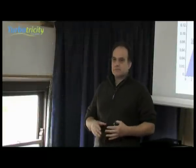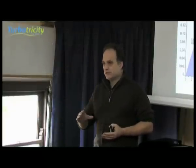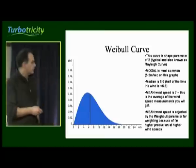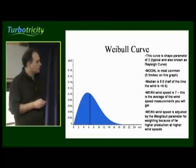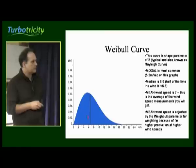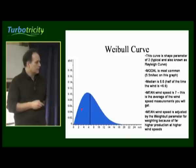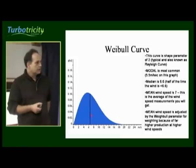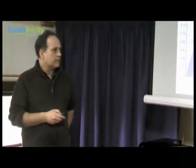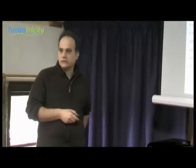The Weibull curve is a curve of the distribution of the wind speed — how often you get wind at different speeds. This curve shows that the most common wind speed is about 5.5 metres per second. The median — half the time the wind is below 6.6 and the rest of the time it's above 6.6. And the average of all wind speed measurements, the mean wind speed, is 7.